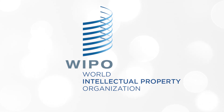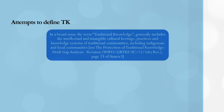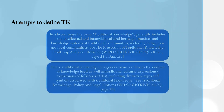There have been certain attempts to define traditional knowledge. WIPO, the World Intellectual Property Organization, has taken leading efforts by convening what is called the Intergovernmental Committee on TK associated with genetic resources. In those key negotiations, certain definitions emerged. In the broad sense, traditional knowledge must generally include intellectual and intangible cultural heritage, practices, and knowledge systems of traditional communities including indigenous and local communities. This was set out in a document called the Draft Gap Analysis produced by WIPO. Hence, TK in the general sense embraces the content of the knowledge itself as well as traditional cultural expressions like folklore, including distinctive signs and symbols associated with traditional knowledge.